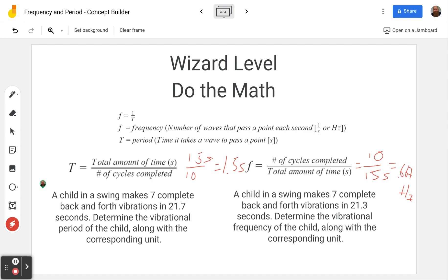Let's do the two problems that we have here. And that will be it for this video. So here we see that we were trying to find the period. A child in a swing makes seven complete back and forth motions in 21.7 seconds. Determine the vibrational period of the child along with the corresponding unit. And you'll have multiple choice for the units, but you have to type in the period. So period T is the equation for period. And so we put the total amount of time, which was 21.7 seconds. And we divide that by the number of cycles, which was seven cycles. And 21.7 divided by seven gives us 3.1 seconds. So you just type in 3.1 seconds and you're good.